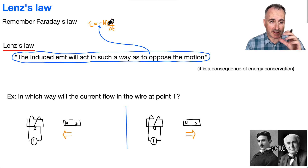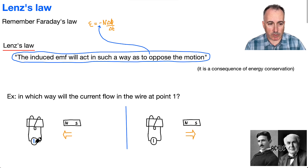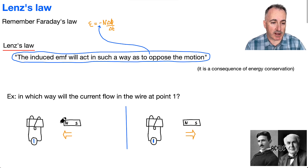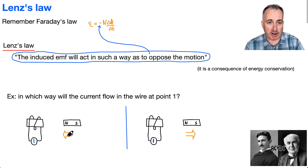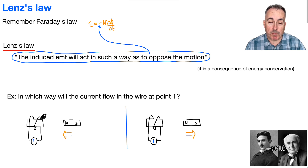Moving magnetic fields will cause an induced EMF, but the direction of that EMF will be opposite to what you would think. So let's say you have an electromagnet and a magnet comes towards it. As it's moving towards, it will induce an EMF, and we can figure out the value from Faraday's Law. But what I care about is the direction. It will create a north-south combination to oppose the motion.